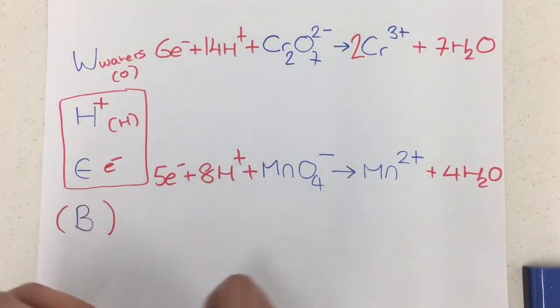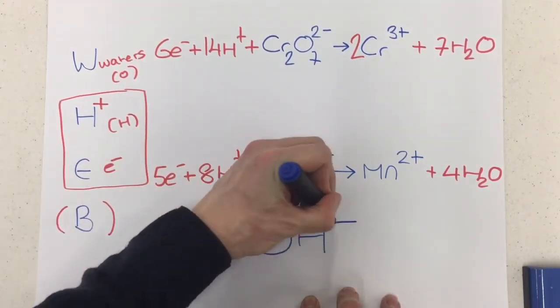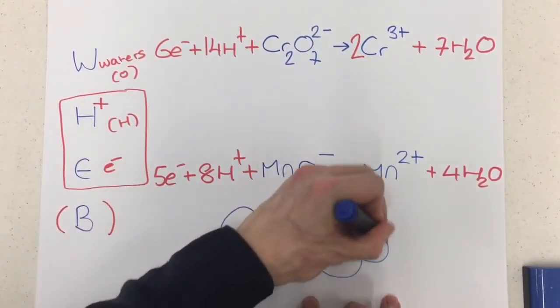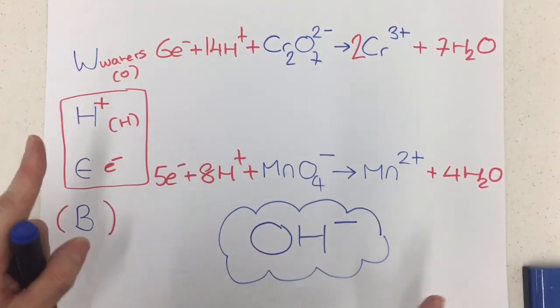Now, the tricky one in the exam is what do you do, and what method do you have when the exam question mentions alkaline conditions? Because at the moment, of course, this is only going to be a method that works for acidic conditions up here. So do we just swap them around? No, we don't.